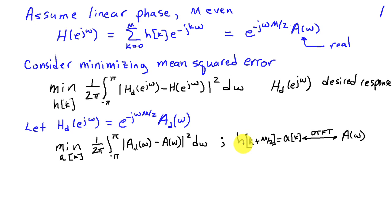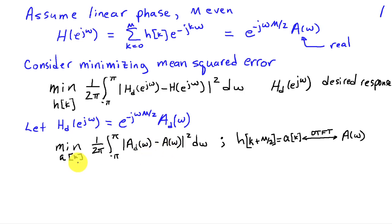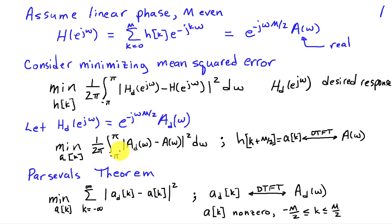We assume that h[k + m/2]—a shift left corresponding to this phase factor—equals coefficients a[k], which has discrete-time Fourier transform A of omega. If I take A of omega and take the inverse DTFT, I get the coefficients a[k]. Rewriting the mean squared error in terms of A of omega, we're minimizing over the coefficients of this time-shifted impulse response. Parseval's theorem says that the integral of the magnitude squared in the frequency domain equals the sum of the magnitude squared in the time domain.